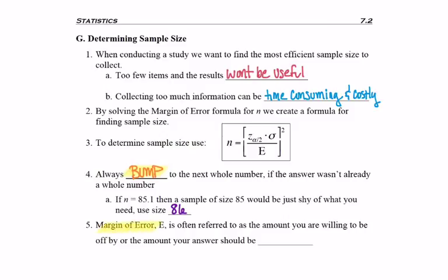Also, remember that when we use E for the margin of error, it's referring to the most that you're willing to be off by. You'll often hear this amount referred to as what you want to be within.